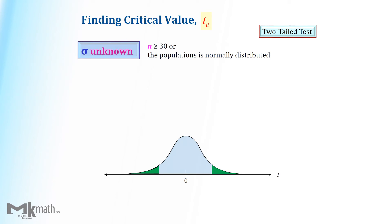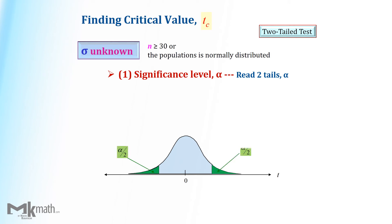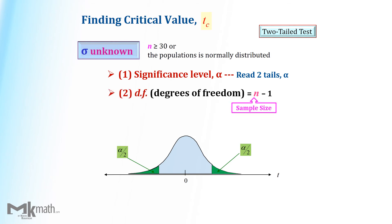Lastly, let's find the critical values for a two-tailed test. There are three steps to find them. Step 1: identify the significance level alpha as two-tailed alpha. Step 2: find the degrees of freedom by subtracting one from the sample size, then look up the table. Step 3: keep in mind that the t-table gives only positive t-scores; however, we should have both positive and negative t-critical values for a two-tailed test.